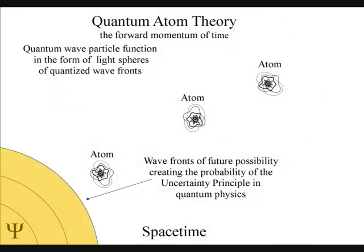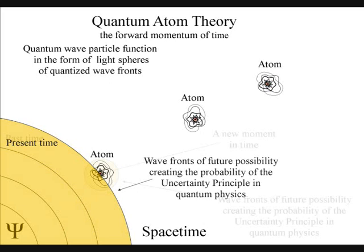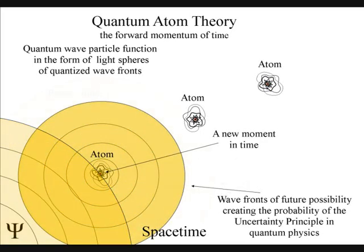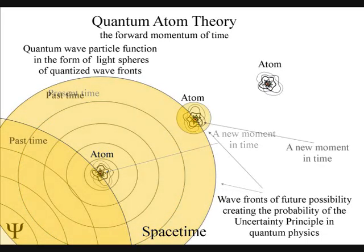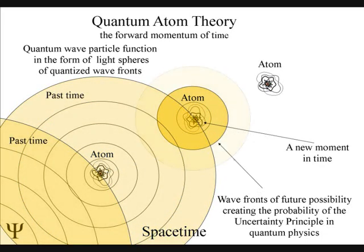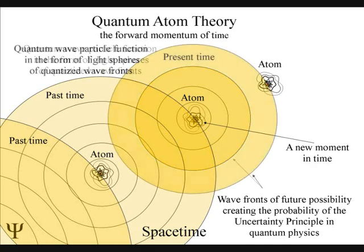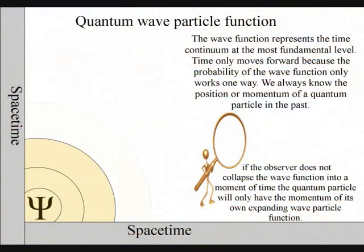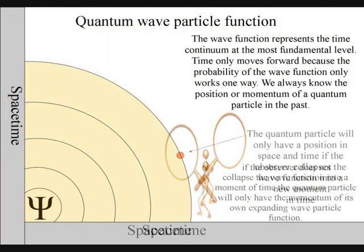There will then be a quantum leap of energy, creating a new wave function of future probability. The uncertainty principle of quantum physics is the same probability that the observer will have with any future event. This is because the wave function of quantum physics represents the time continuum at the most fundamental level.